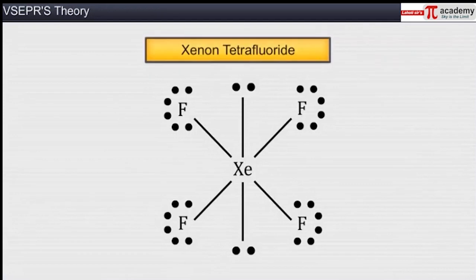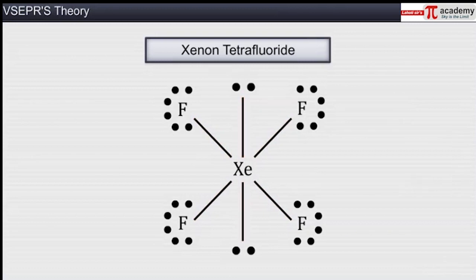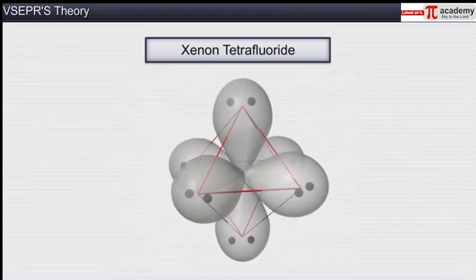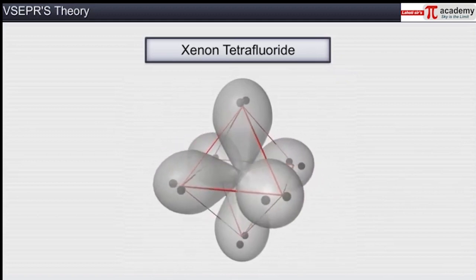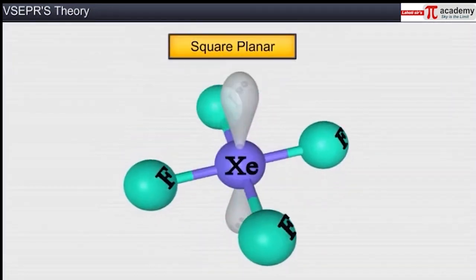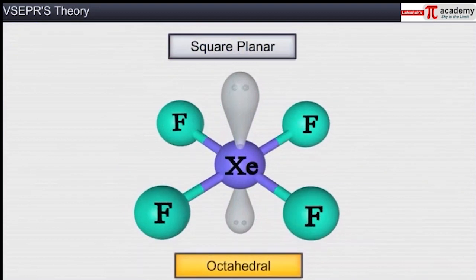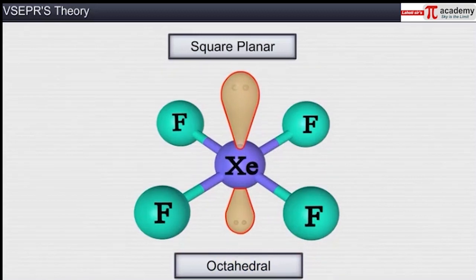In a molecule of xenon tetrafluoride, the central xenon atom is surrounded by four bonded pairs of electrons and two lone pairs of electrons. The geometry of the molecule is distorted from the regular octahedral geometry to square planar, due to the presence of two lone pairs of electrons on its central xenon atom.